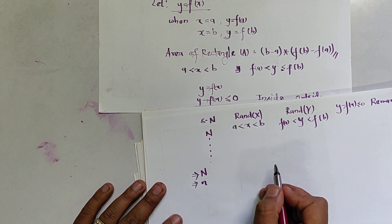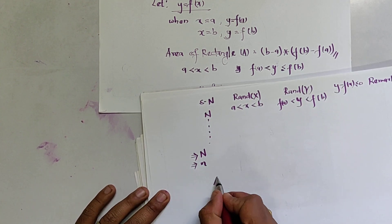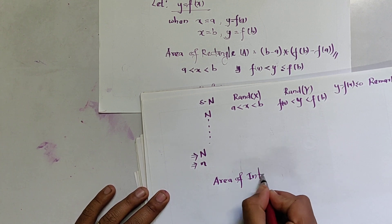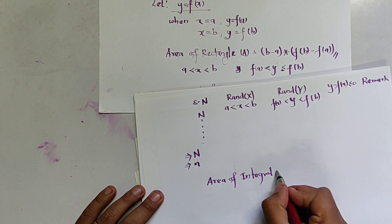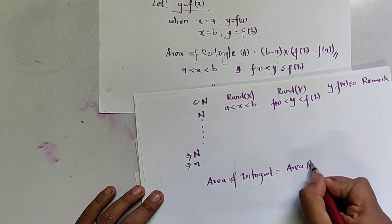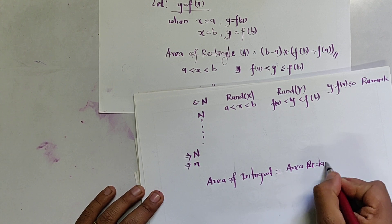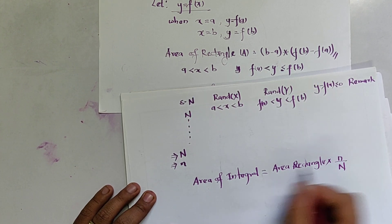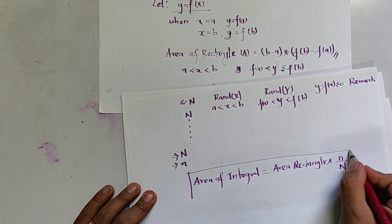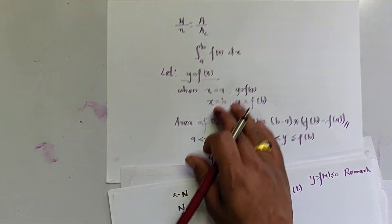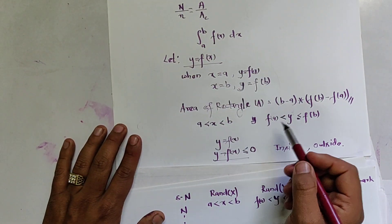We record the total number of random numbers N and the total number of 'in' points, meaning points inside the boundary. Finally, we calculate the area of the integral as: area of rectangle multiplied by (n_in divided by N). This is the required formula to calculate the value of the integral.